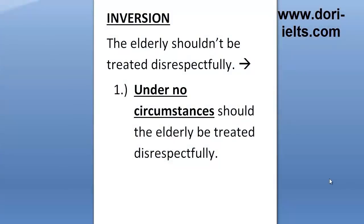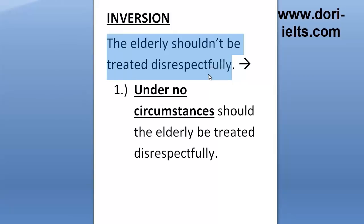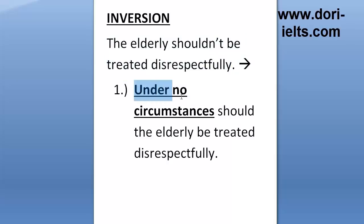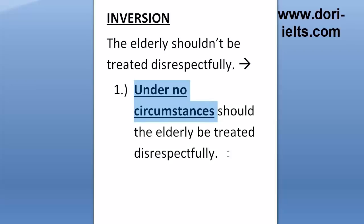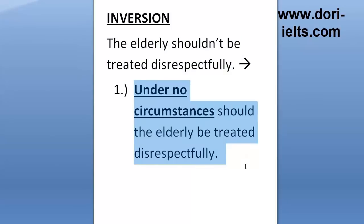Here are some common phrases and how we can change them using inversion. The first sentence: 'The elderly shouldn't be treated disrespectfully' — a sentence you might write in a writing task 2 exam. Here is how we can make it more advanced and more academic by using inversion. When you use the phrase 'under no circumstances' at the beginning of a sentence, the structure that follows should be like a question — that's why we call it inversion. But of course it's not a question; it's used for emphasis, so we don't use any question marks. This sentence becomes: 'Under no circumstances should the elderly be treated disrespectfully.' Instantly, this common sentence became much more interesting and much more advanced.